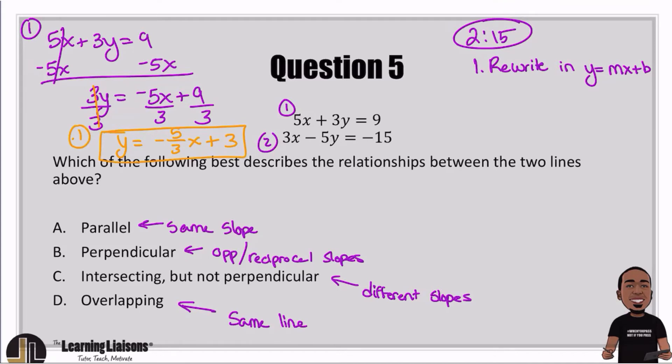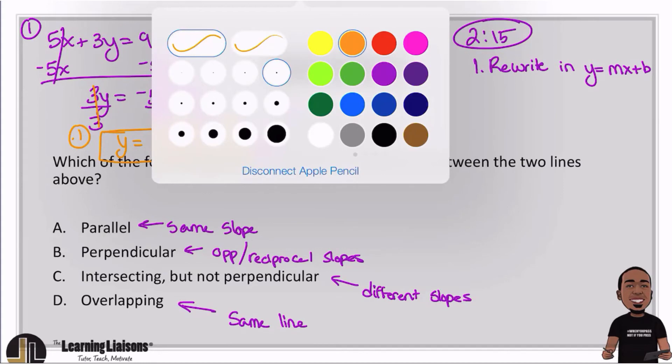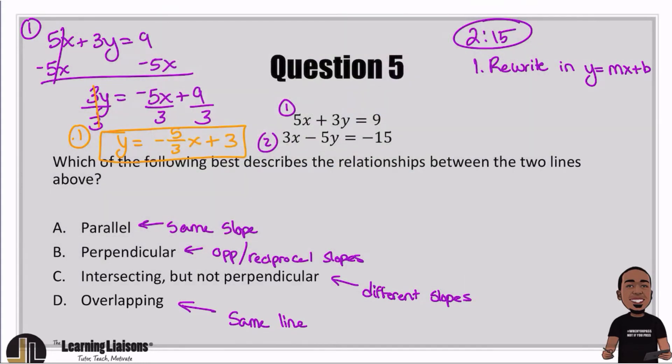Now let's go and do the same for the second line. I'm going to go ahead and grab a different color here. I'll choose that nice little green there. So 3x minus 5y equals negative 15. And what we're going to do here again, same deal, get the y by itself because I want to write it in that form. So I'm going to subtract 3x from both sides. From there, that eliminates. And then we have negative 5y equals negative 3x minus 15.